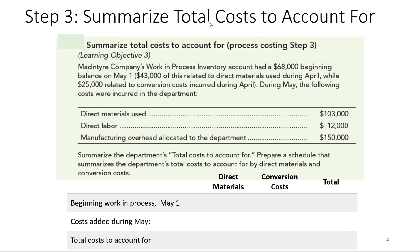Step three is to summarize the total cost to account for. McIntyre Company's work in process inventory had a $68,000 beginning balance on May 1st — $43,000 related to direct materials and $25,000 to conversion costs incurred during April. During May, additional costs were incurred: direct materials used, direct labor, and manufacturing overhead. We prepare a schedule summarizing these costs.